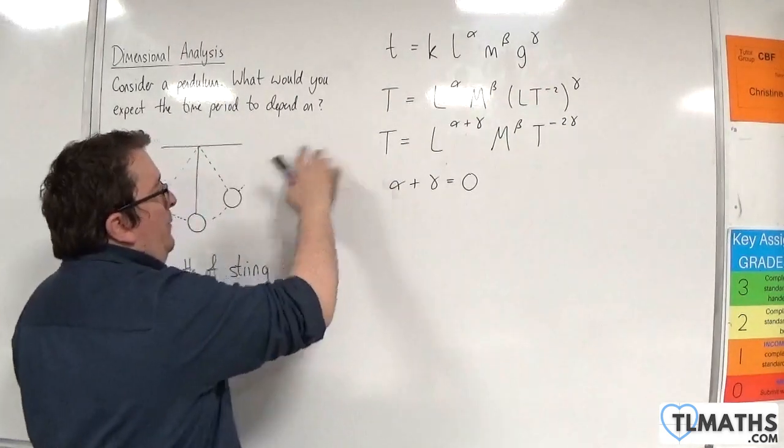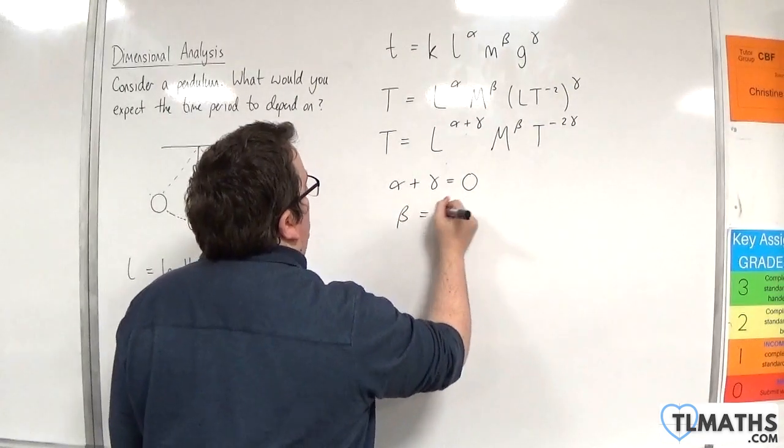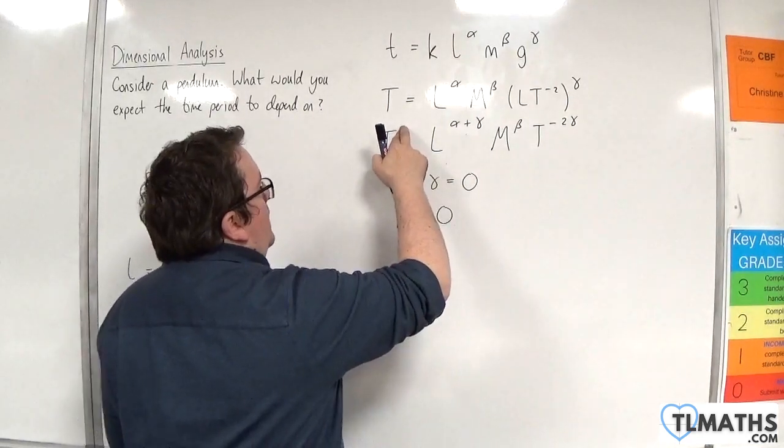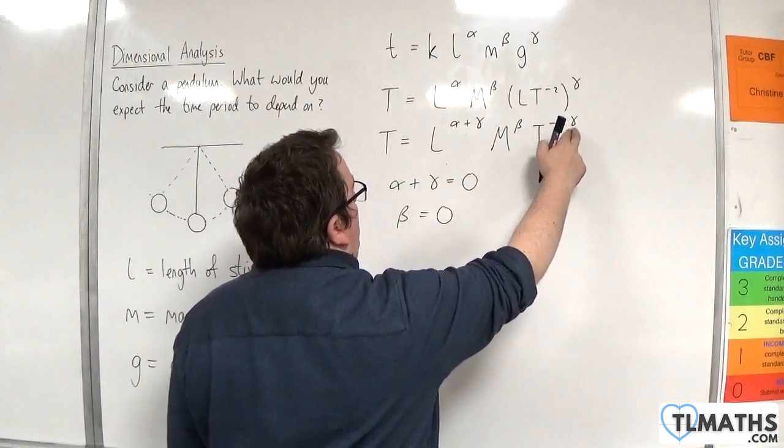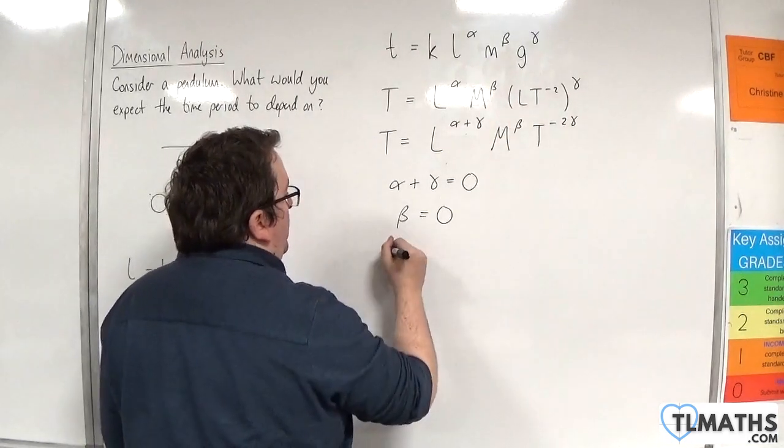We don't have any M's on the left-hand side either, so it's M to the power of 0 over here. So beta would have to be 0. But we do have T to the 1 here must be equal to the T to the power of minus 2 gamma here. So 1 must be equal to minus 2 gamma.